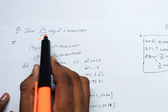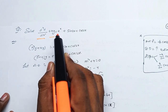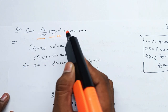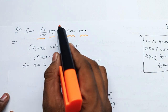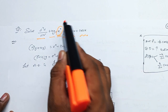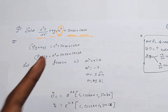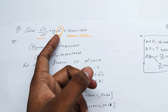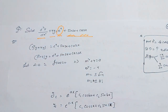D squared by dx squared plus 4y is equal to e^x · sin2x · cosx. This is the second method. Here sin, cos — and this is the third method. You can do the second method or you can do the third method.